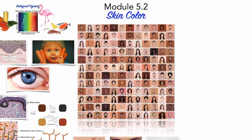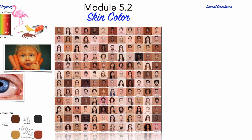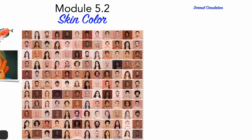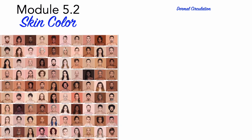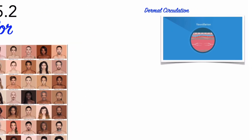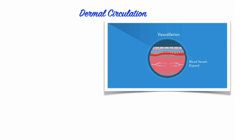Returning to the role of pigments in skin color: another important biological pigment that influences skin color is hemoglobin. Our red blood cells are packed with millions of copies of the protein hemoglobin, a pigment protein that binds oxygen and carbon dioxide. When bound by oxygen, oxyhemoglobin is bright red. Given that blood vessels are found in the dermis just beneath the epidermis, depending on the amount of blood flow and oxygen concentration, dermal circulation can ultimately influence skin color.